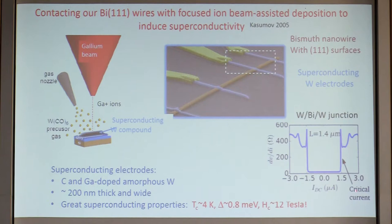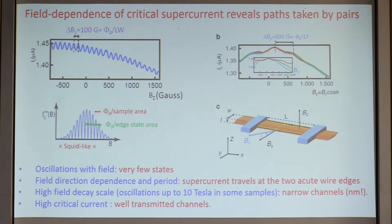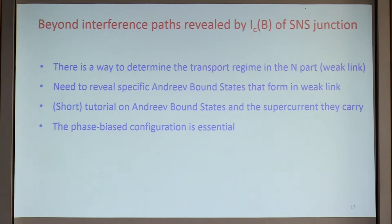You can plot the critical current as a function of magnetic field, and you see the critical current oscillates with one period as a function of field — a SQUID-like behavior indicating two channels. The supercurrent has two paths. Turning the magnetic field to see which areas are compatible, you see the two zones are at the acute corners of the wire. The fact that it oscillates with field means there are very few states at the acute wire edges. The high field of several thousand Gauss or Tesla — depending on the samples — means the channels are very narrow, and the high critical current means they're well transmitted.